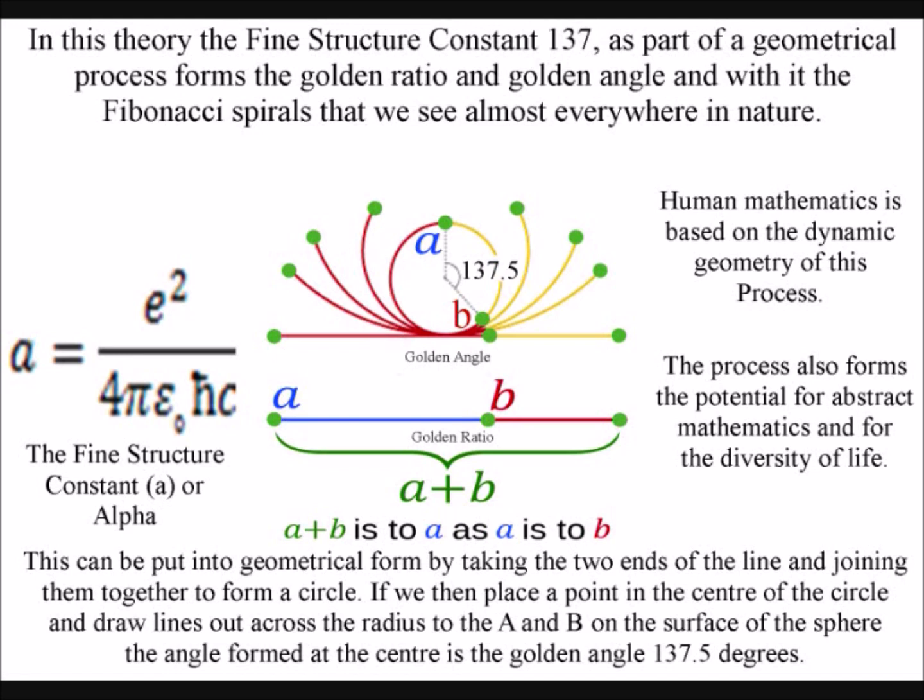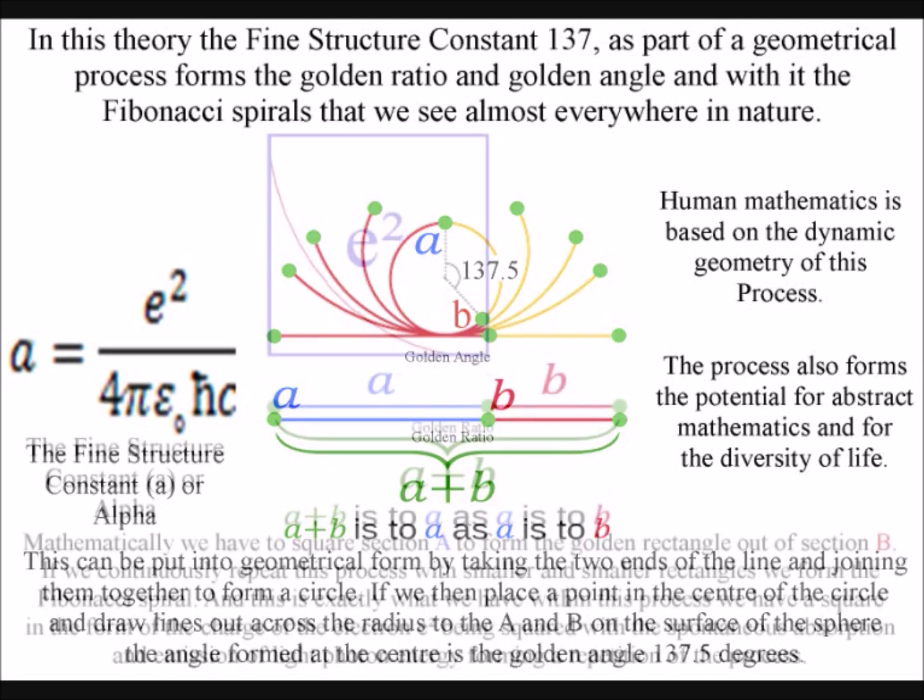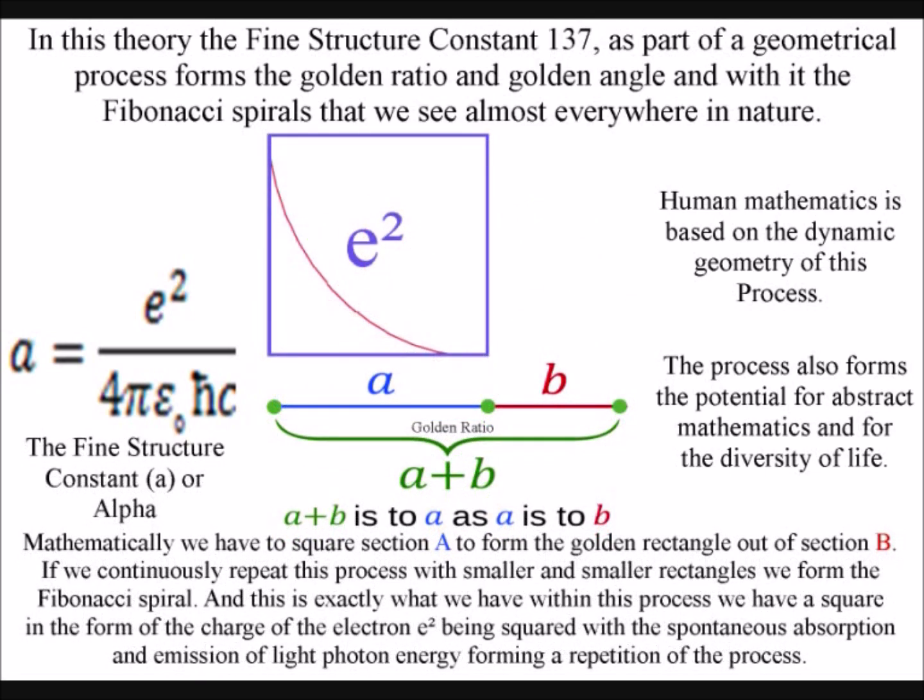Mathematically we have to square section a to form the golden rectangle out of section b. If we continuously repeat this process with smaller and smaller rectangles we form the Fibonacci spiral.